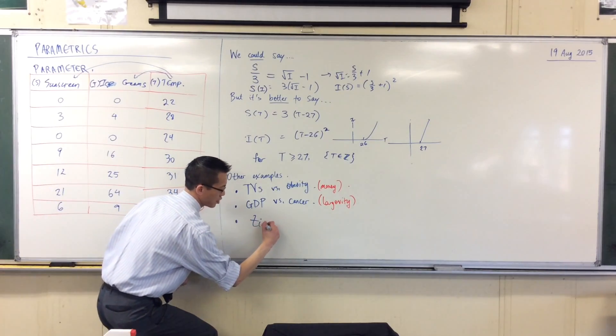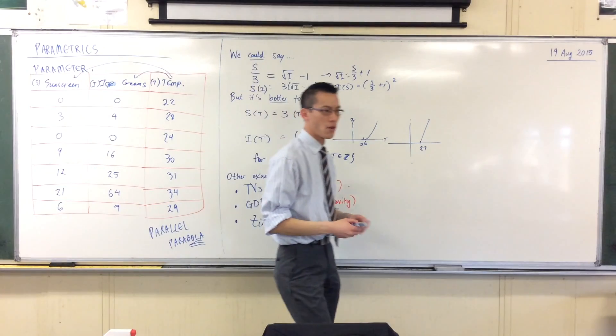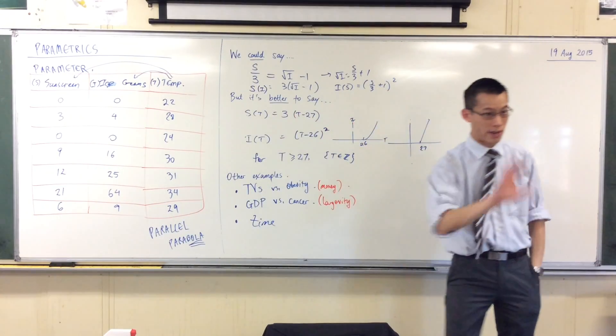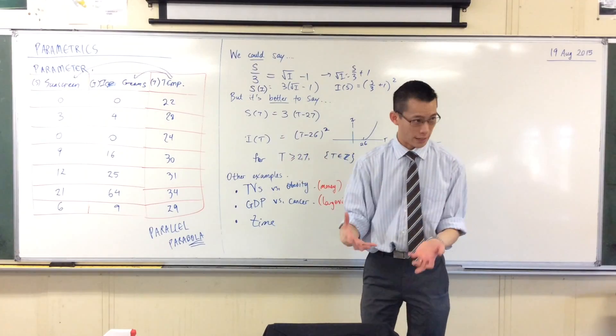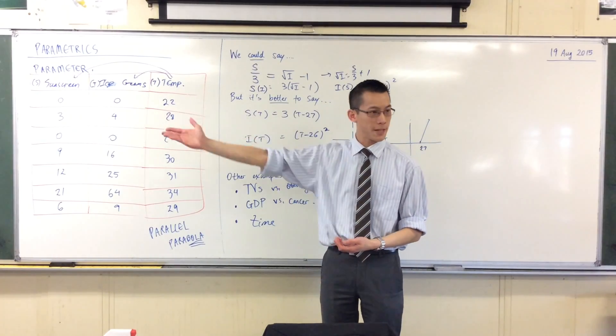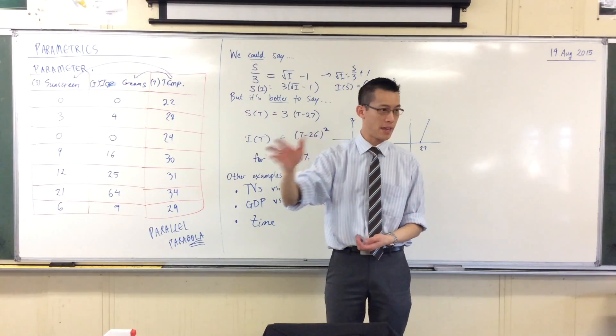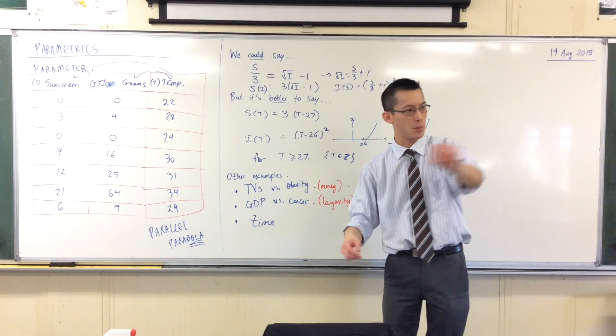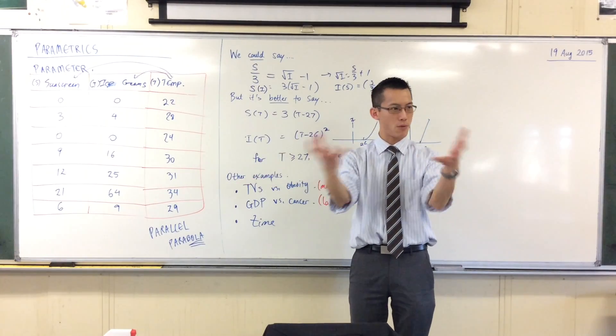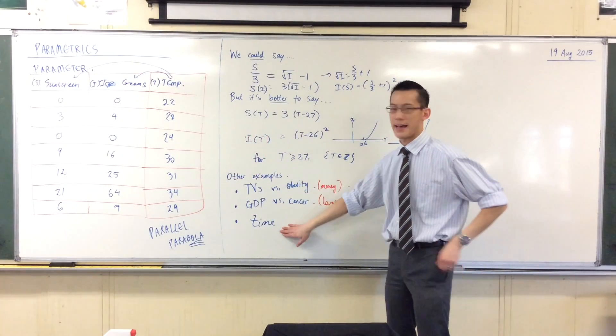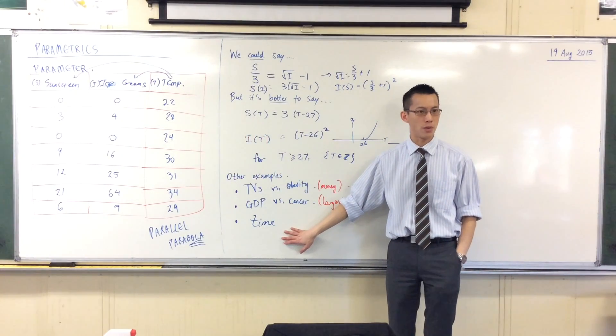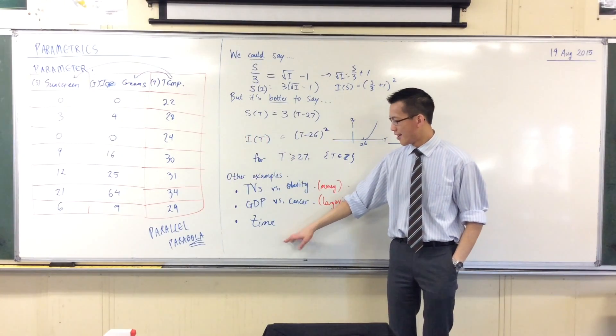You can see these kinds of things happen all the time with parameters. Another very common parameter I'm just going to put there by itself is time. You will meet this a lot in the rest of this course. You'll have two different things, like say an object is moving. There's its displacement—how far away it is from something—and then its speed, how quickly it's moving. Those two things can be related to each other, but really what they're both related to is the passage of time in a situation.